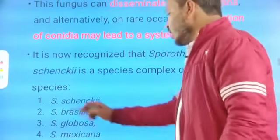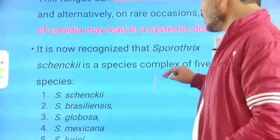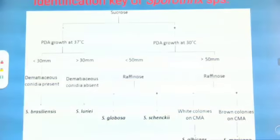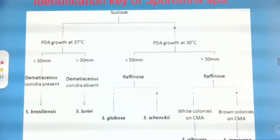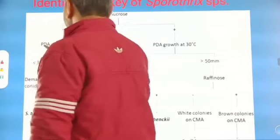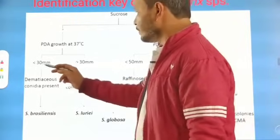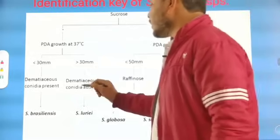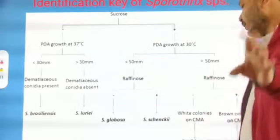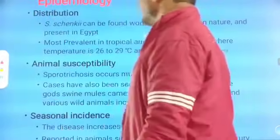It is now recognized that Sporothrix schenckii is a species complex of five distinct species: Sporothrix schenckii, Sporothrix brasiliensis, Sporothrix globosa, Sporothrix mexicana, and Sporothrix luriei. These species can be identified by growing them on different media such as sucrose, PDA growth media at 37°C and at 30°C, and by the demataceous conidia present.